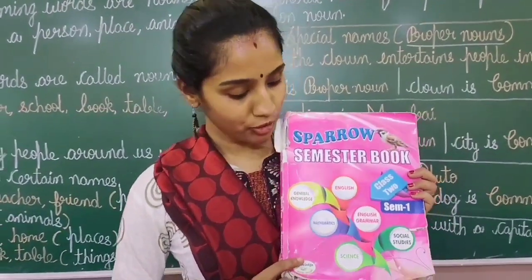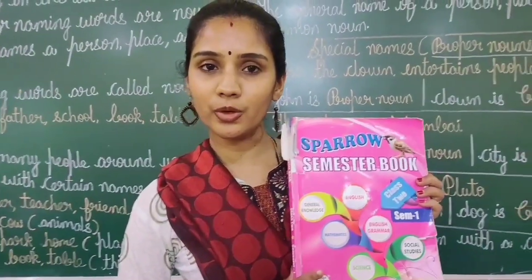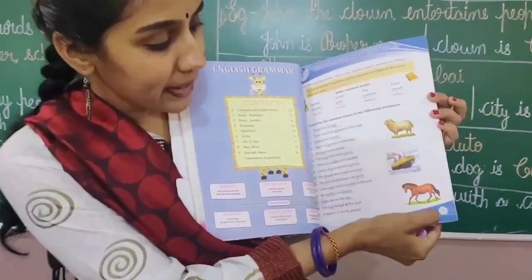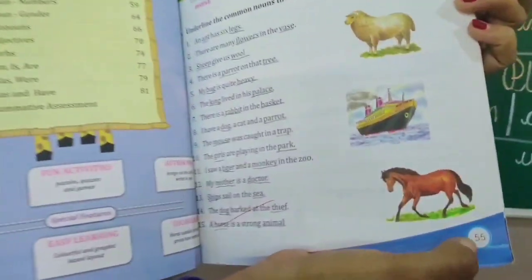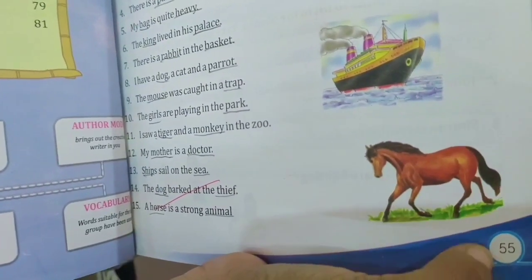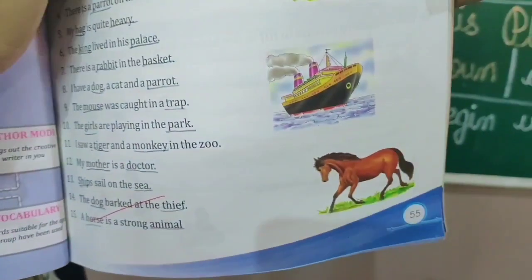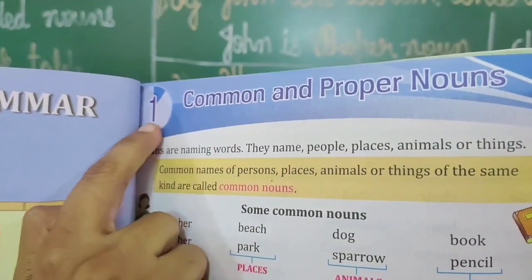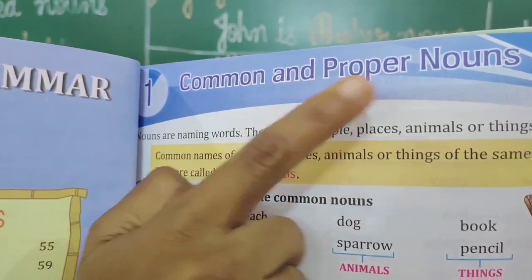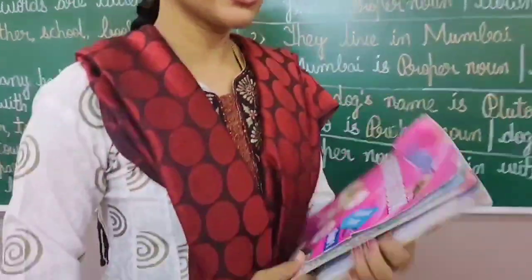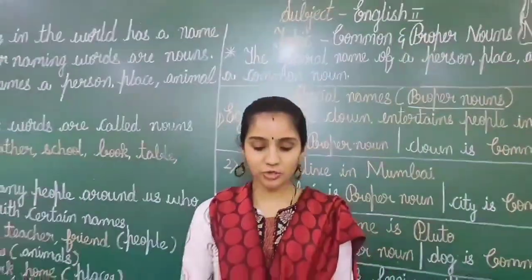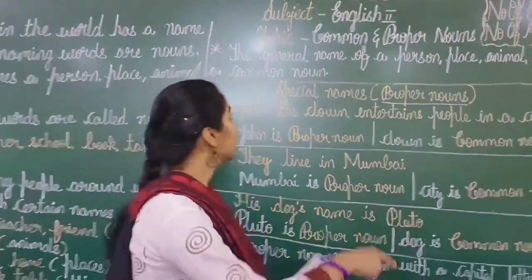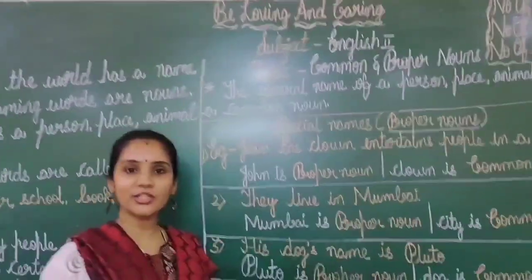Children, everyone take out your Sparrow textbook and open page number 55. Lesson number 1 — Common and Proper Noun. Today in this class I am going to teach you about Lesson 1: Common and Proper Noun.